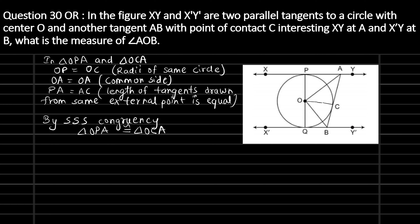By corresponding parts of congruent triangles (CPCT), we get angle POA equal to angle COA. Let's assume both of them are equal and both are equal to x.